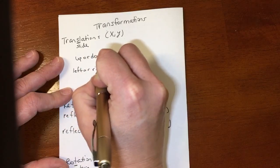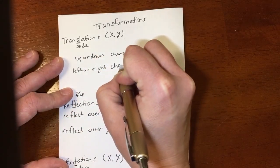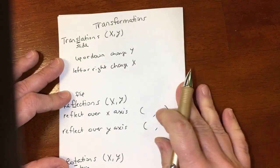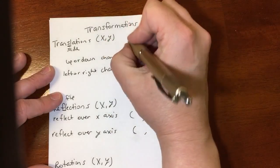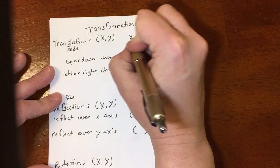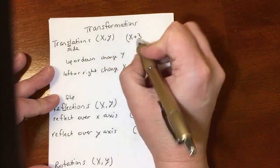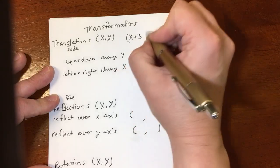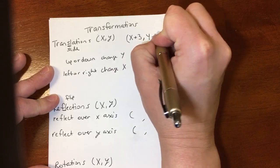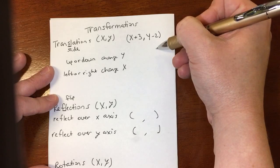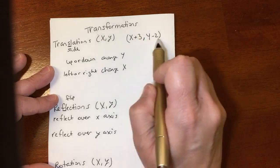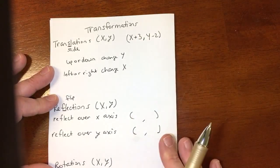then I'm going to change the X. So for example, I could change this to be, say, (X+3, Y-2). The X would go to the right 3, and the Y would go two units down. So translations are the ones where you add or subtract something.